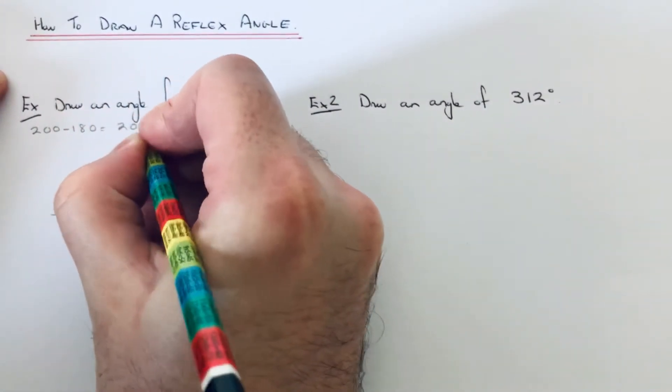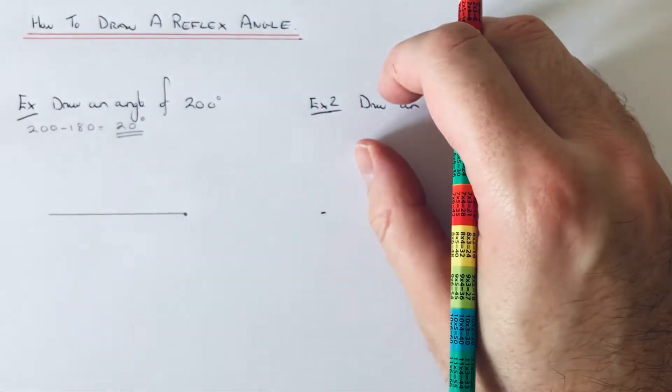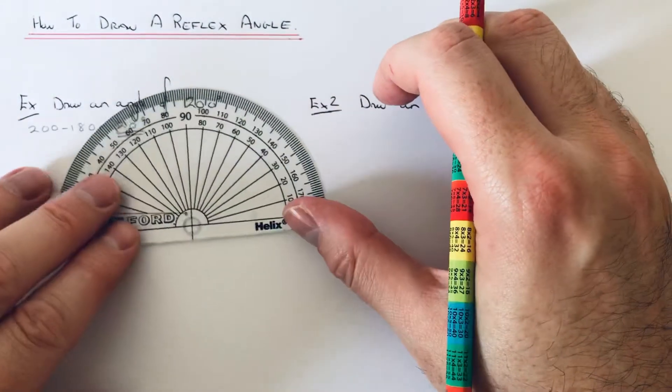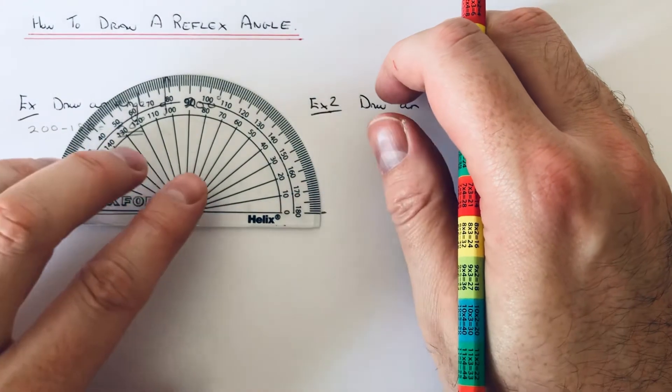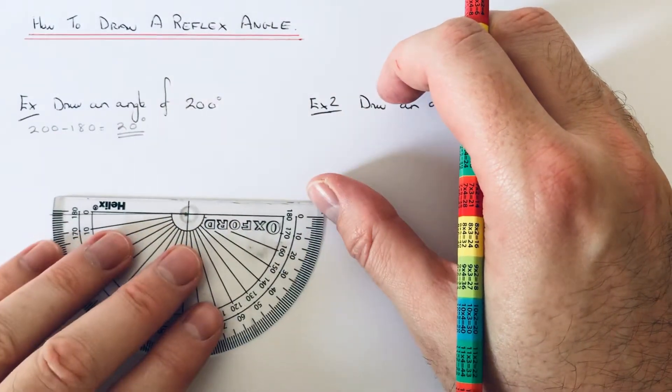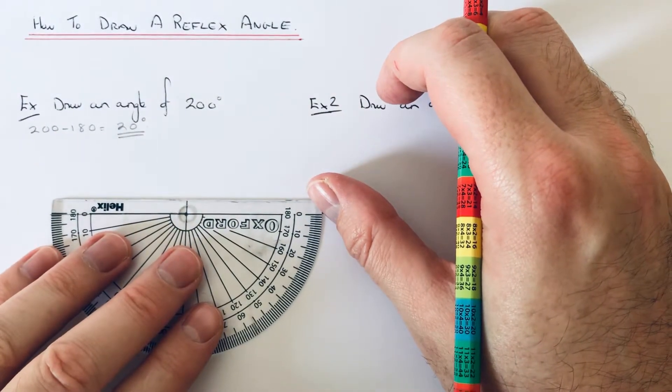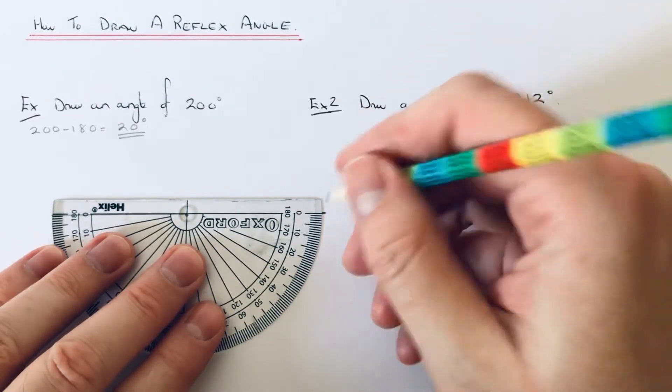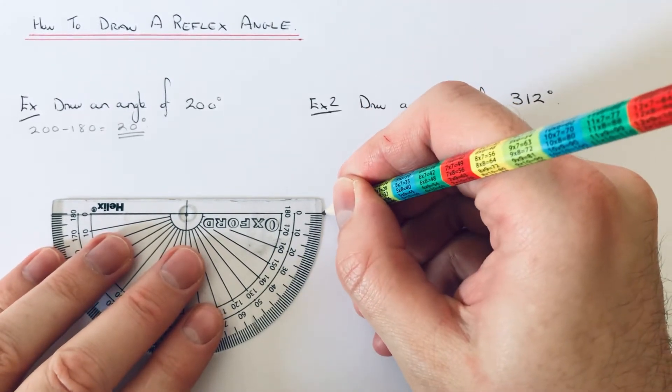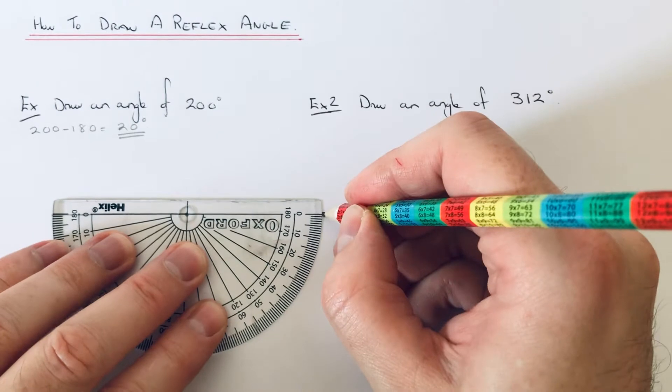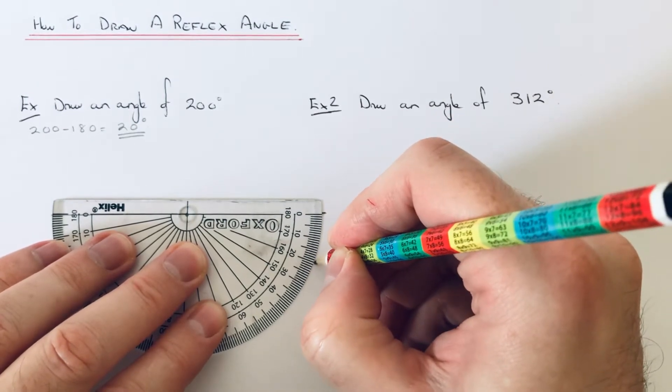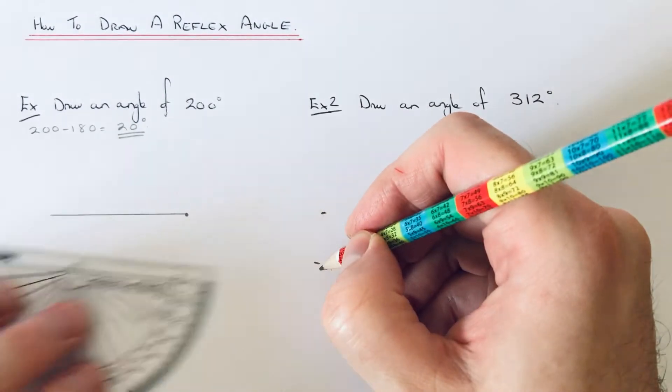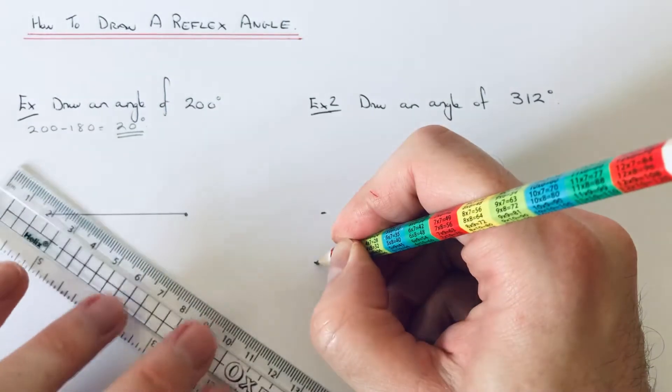We just need to measure an extra 20 degrees, so we add our protractor. If we turn it around the other way, just make sure you've got zero on that little marker there. Use the outside scale to do the extra 20 degrees, which is there.